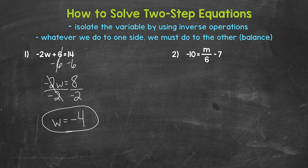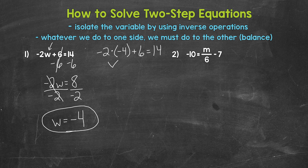We can check this by plugging negative 4 in for w. So we have negative 2 times negative 4 plus 6 equals 14. Starting with multiplication: negative 2 times negative 4 — a negative times a negative equals a positive — gives us 8. Then 8 plus 6 equals 14. So we are correct: w equals negative 4.